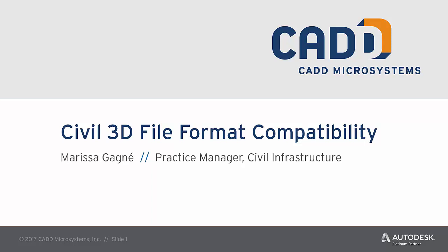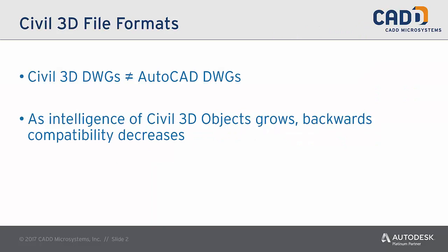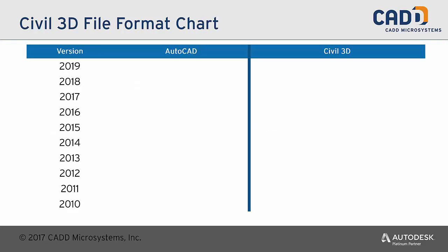The first and most important thing to understand when you're working with these Civil 3D file formats is the fact that the Civil 3D DWG is not necessarily equal to the AutoCAD DWG. Of course, you are still working with an AutoCAD DWG — that is your file that you're saving — but because of the intelligence of the objects saved in that DWG, the versioning is not necessarily the same. As the intelligence of Civil 3D objects grows, the backward compatibility of those objects actually decreases. And those objects often grow per each release or per every few releases. So let's take a look at a chart that illustrates this.